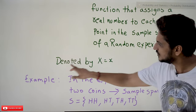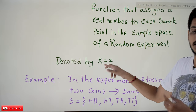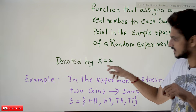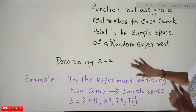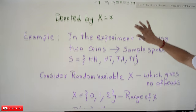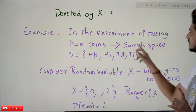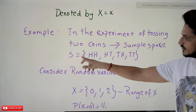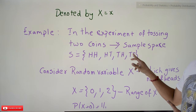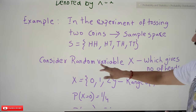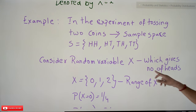A random variable is denoted by capital X. The value that is present in the random variable is given by small x. Now with an example we are going to understand this definition. In the experiment of tossing two coins, what is the sample space? Our random variable X is the number of heads.